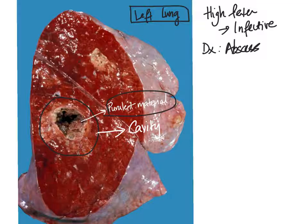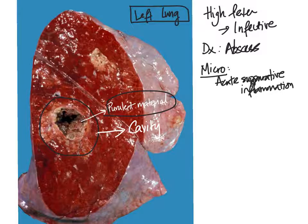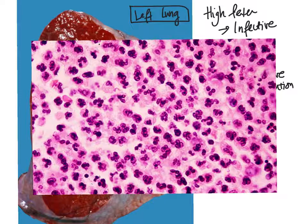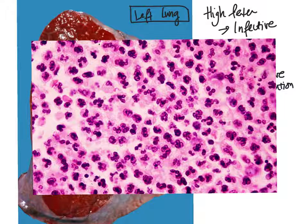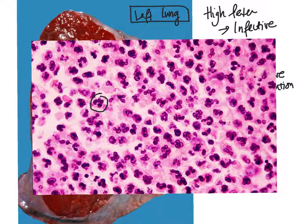Think about some of the causative organisms that can give rise to abscess. What we would see on microscopy would be acute suppurative inflammation, which essentially comprises lots of neutrophils, as you can see here. How do we know that they are neutrophils? Look at this cell here — you can see that the nucleus is multi-lobed. So these neutrophils are also known as polymorphonuclear leukocytes, and they are the key player in acute inflammation.